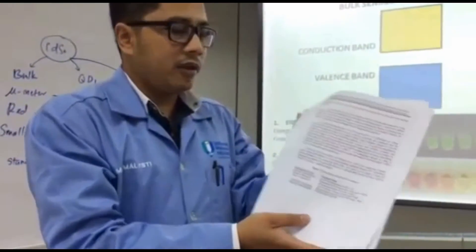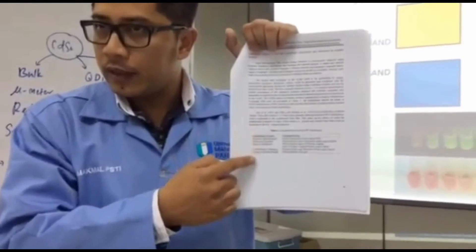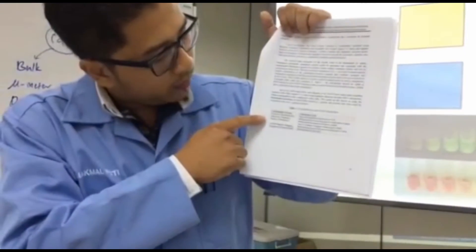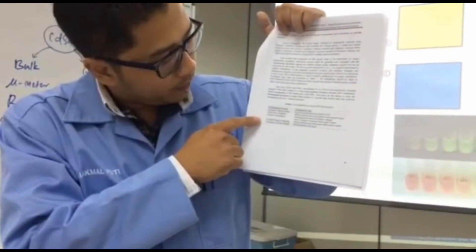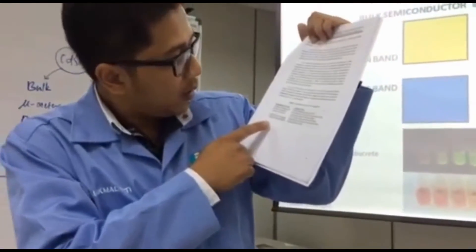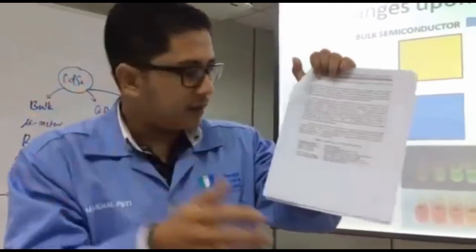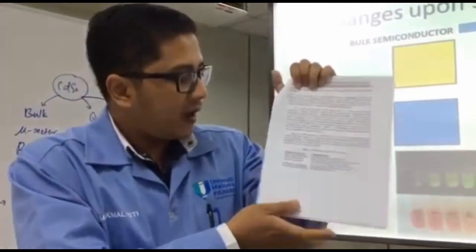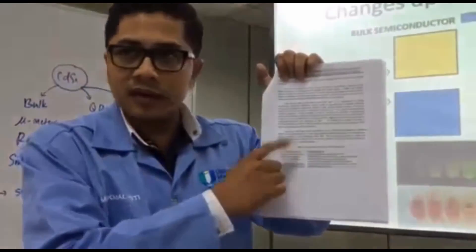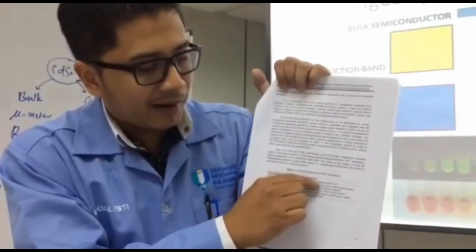What you need to do is follow these steps. How many steps? Five steps. The first step is Geometry Optimization. This is the very first step, and here is the command line.